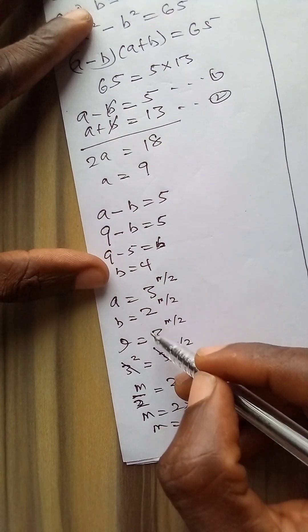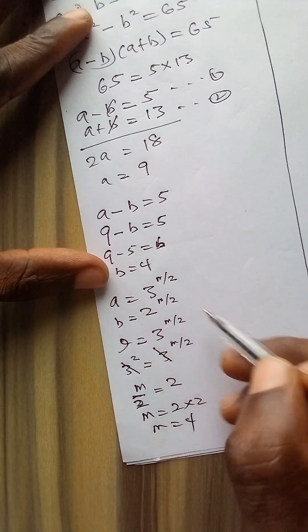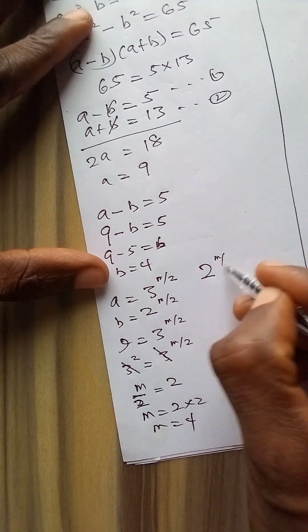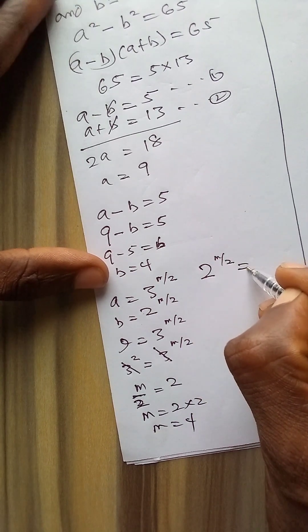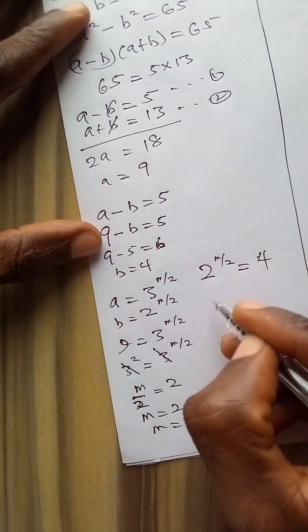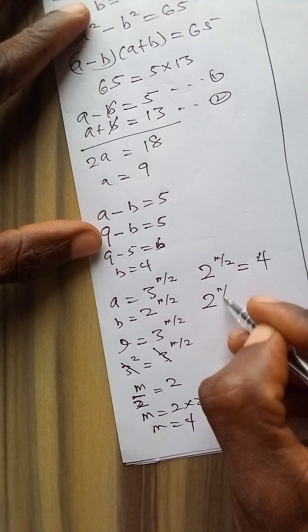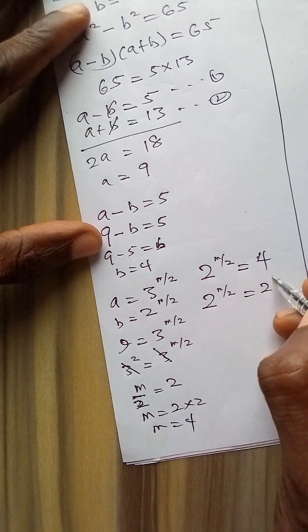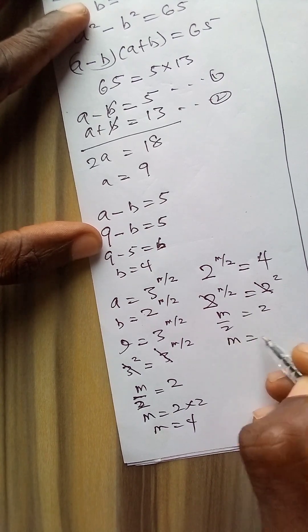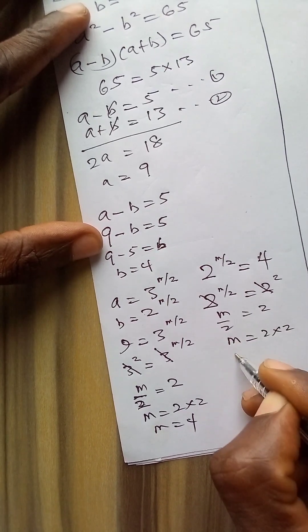If I do the same thing with b I will still have the same value as 4. So 2 to power m over 2 is equal to the value of b which is 4. So 2 to power m over 2 is equal to 2 to power 2. This will cancel, m over 2 is equal to 2, and m is equal to 2 times 2 which is 4.